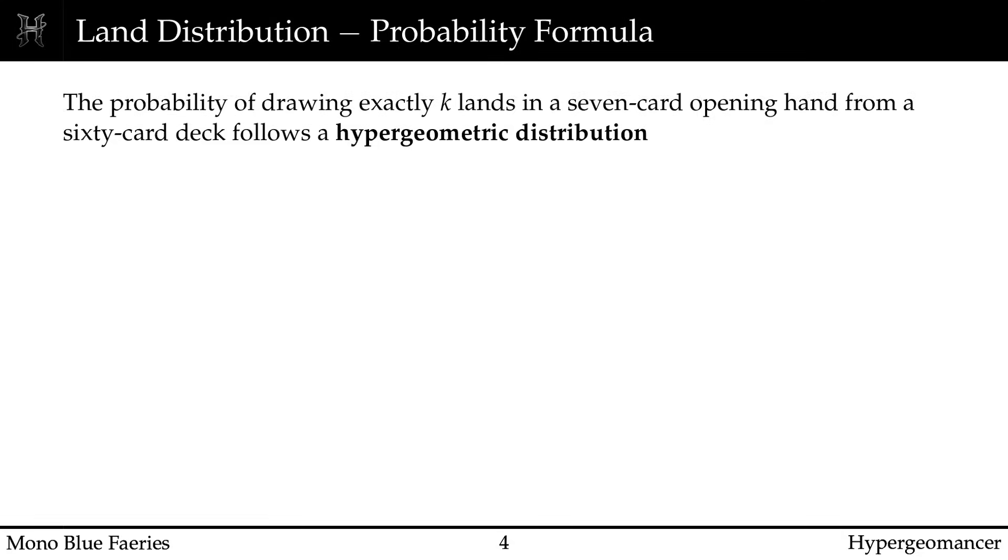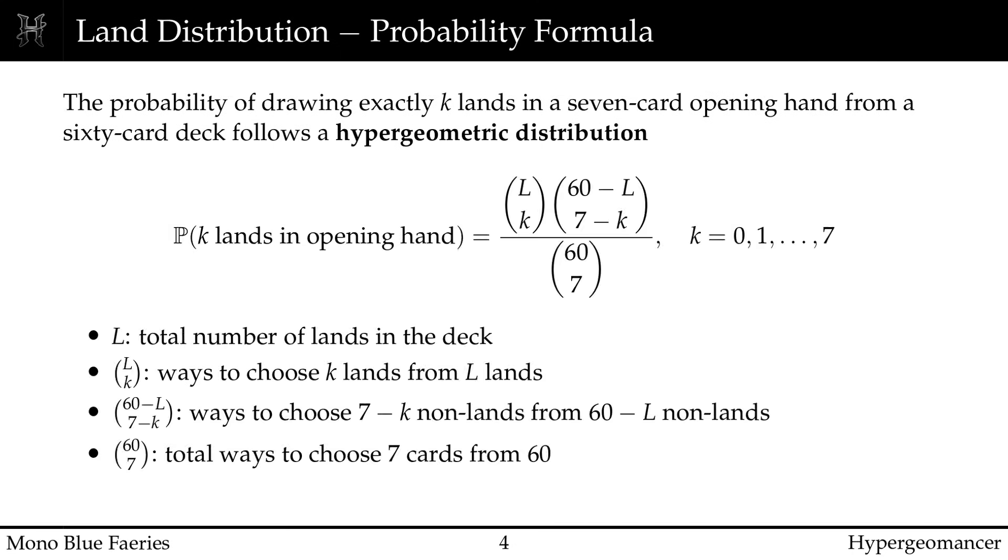We begin by analyzing the distribution of lands in an opening-hand for Mono Blue Faeries. Before exploring specific scenarios, we need to establish the mathematical foundation for our analysis. When you draw your opening-hand in Magic, you are sampling cards, without replacement, from a 60-card deck. This isn't a coin flip or a dice roll. It follows from what's called a hypergeometric distribution. This is the appropriate statistical model whenever you are drawing from a finite population, where each draw changes the odds for the next one. The formula tells us the probability of drawing exactly k lands in a 7-card opening hand.